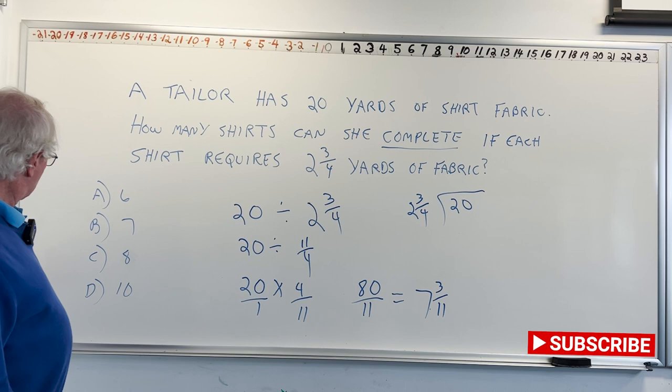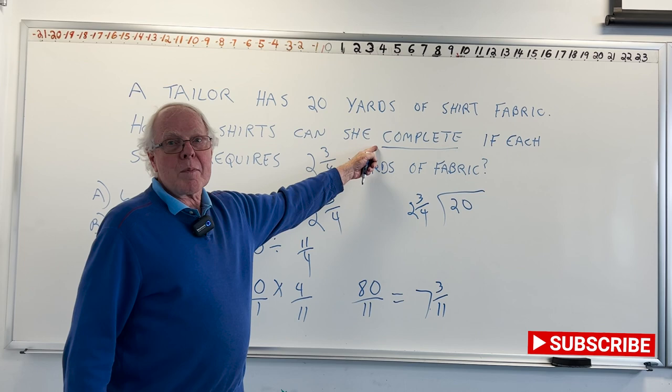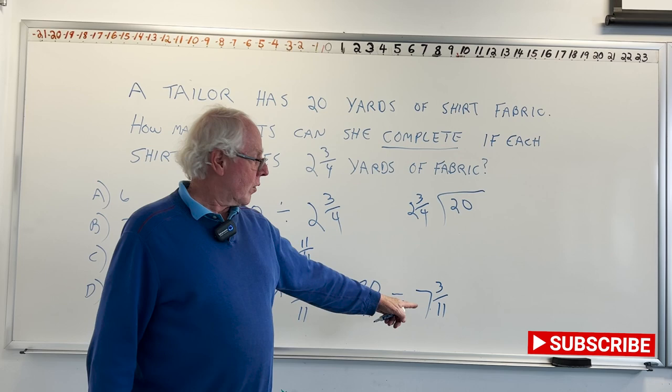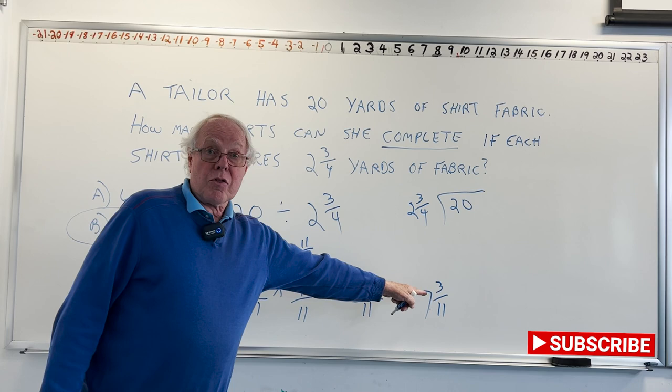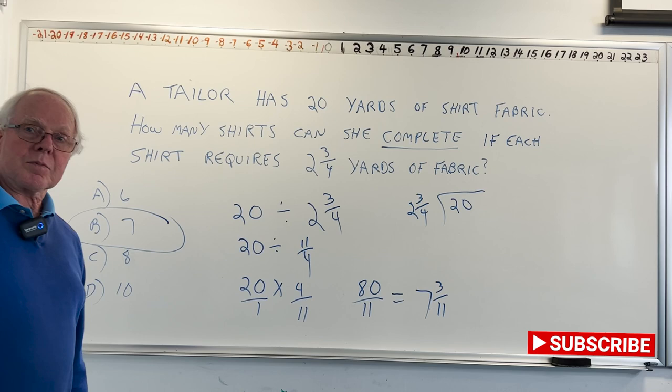So we look over here at the multiple choice. I don't see 7 and 3/11. Why is that? Because it says how many complete shirts? Nobody wants to buy 3/11 of a shirt, so this is the whole number is the number of complete shirts that you can make. And so our answer is going to be B, seven complete shirts, and there will be 3/11 of a yard left over. That's the first one.